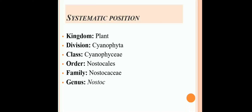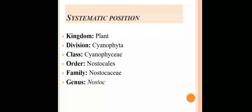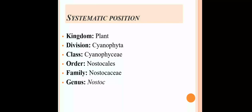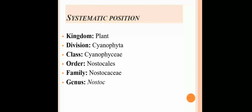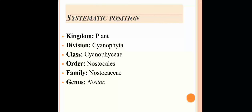Systematic position means the scientific classification of a particular organism. Systematic position includes steps like kingdom, division, class, order, family, and genus, and you have to remember two characters of each. First is kingdom Plantae — plants follow an autotrophic mode of nutrition and contain photosynthetic pigments like chlorophyll.